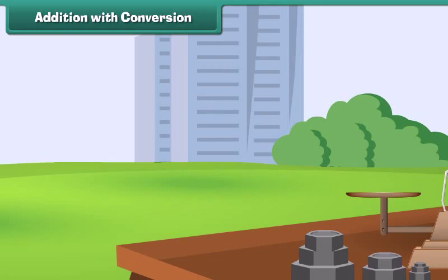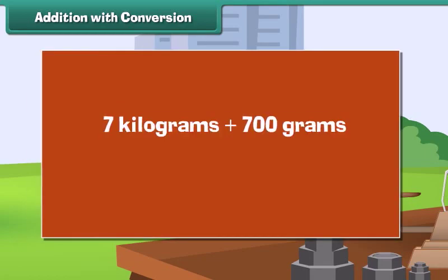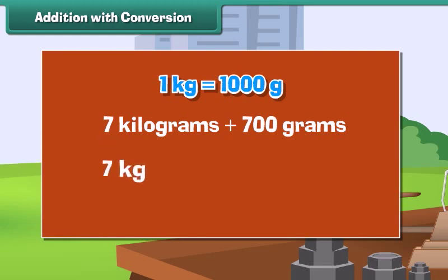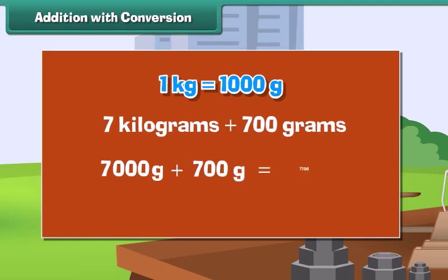Addition with conversion: Let us now add 7 kilograms with 700 grams. First, convert kilograms into grams: 1 kg is equal to 1000 grams, so 7 kg is equal to 7 into 1000 grams, which equals 7000 grams. Therefore, 7 kg plus 700 grams equals 7000 grams plus 700 grams, which equals 7700 grams.